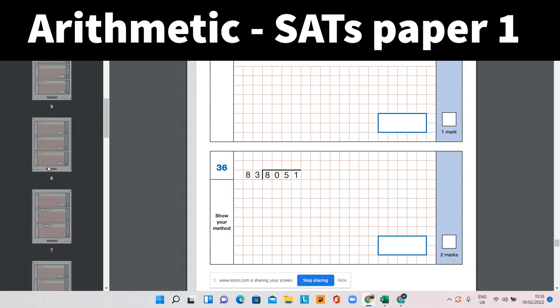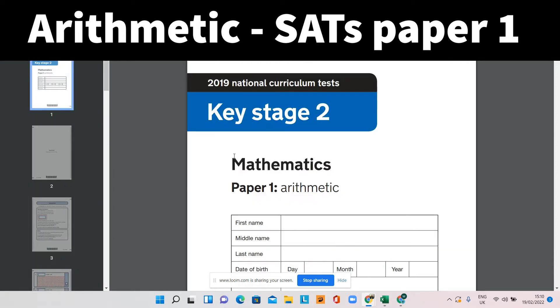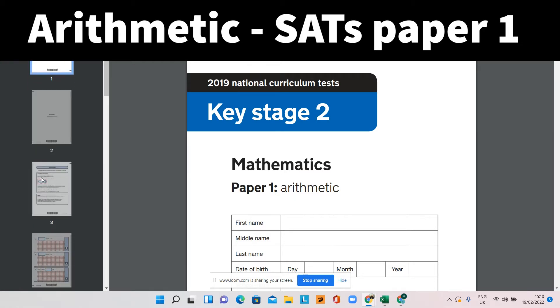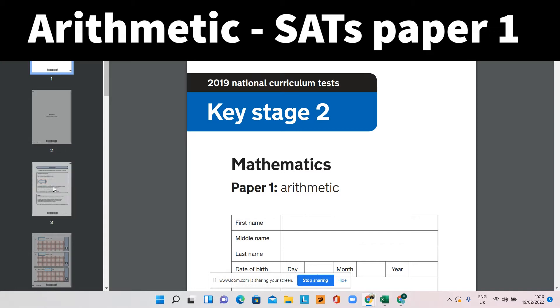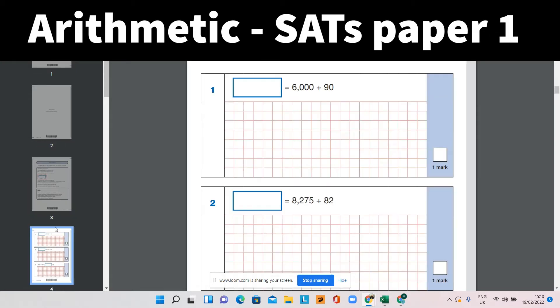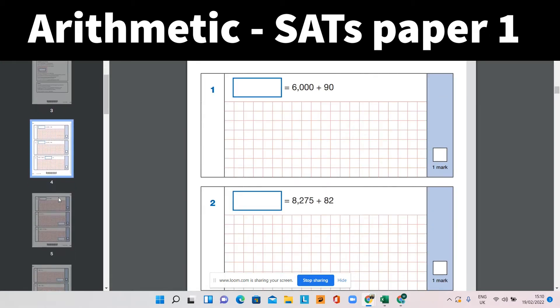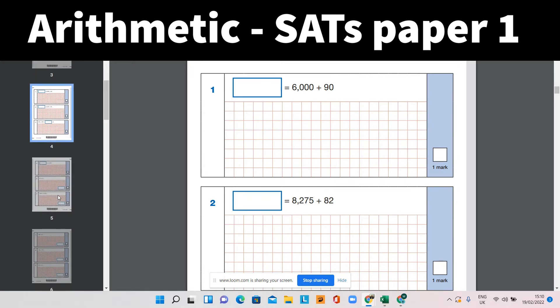But why is it important that they score high on this first paper? Well, first of all, this paper is particularly, in my opinion, easier than the other two. The other two are reasoning papers. The children have to apply what they've learned in maths lessons to problem solving. And there's more margin for error in those questions. It's across a much wider range of subjects within maths, where this one is focusing on place value and number fractions, primarily.